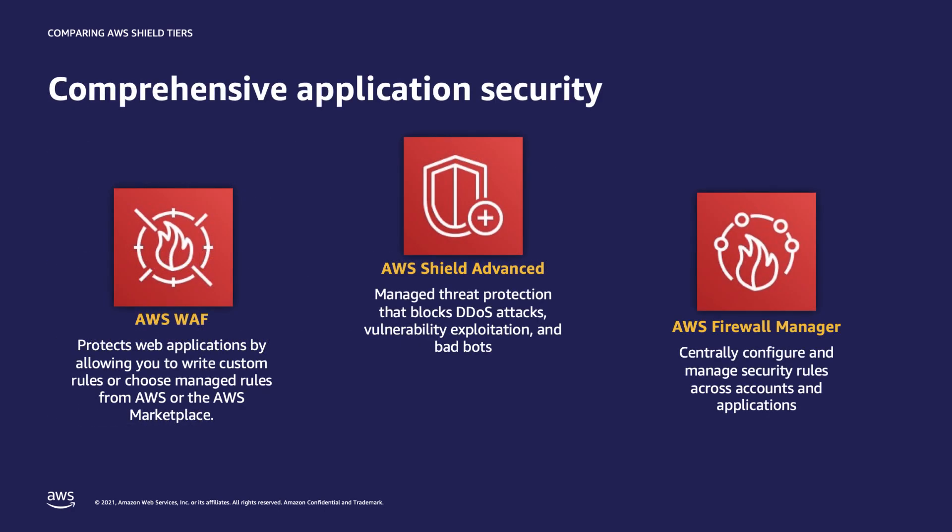Our perimeter protection portfolio consists of three main services. AWS WAF, or Web Application Firewall, is meant to protect your HTTP application against layer 7 attacks. You can choose from AWS Managed Rules that are updated periodically and maintained by our threat research team, or partner rules. Or you can build your own custom rules using the AWS WAF console, API, or CLI to configure your policies and rules.